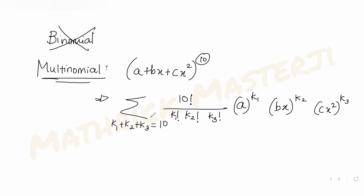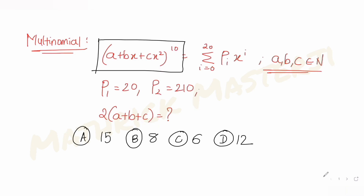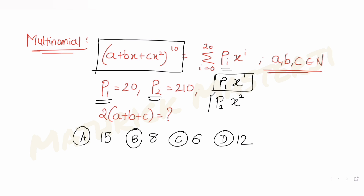We need to find the coefficients of x¹ and x². Because we are given p1, we have i as 1, so that gives x raised to 1. And for p2, we have x raised to 2. So we just need to find the coefficients of x¹ and x².